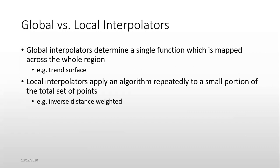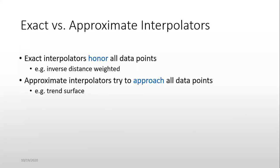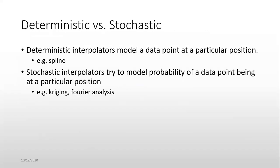Global versus local interpolators. Global interpolators determine a single function which is mapped across the whole region, example: trend surface. Local interpolators apply an algorithm repeatedly to a small portion of the total set of points, example: inverse distance weighted. Exact versus approximate interpolation. Exact interpolation honors all data points, example: inverse distance weighted.